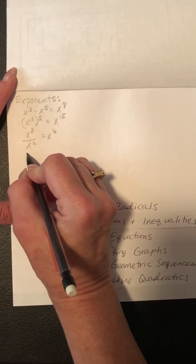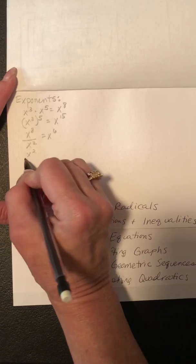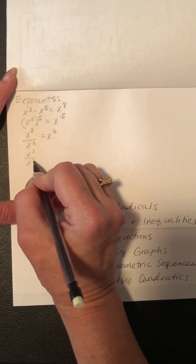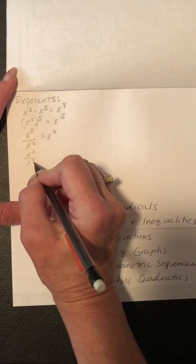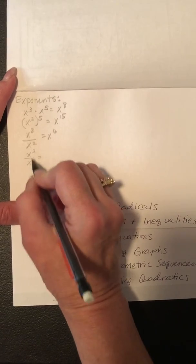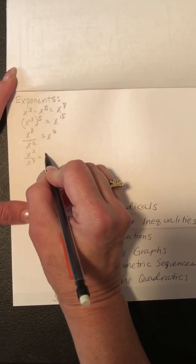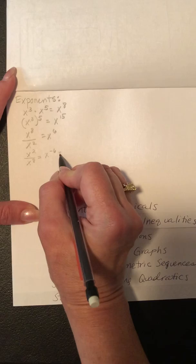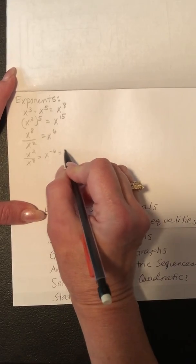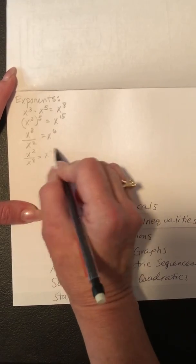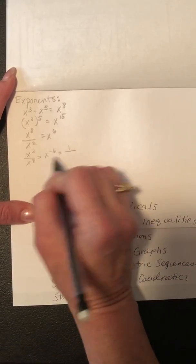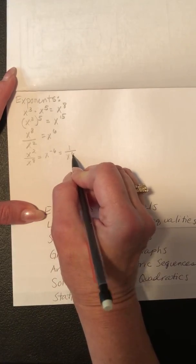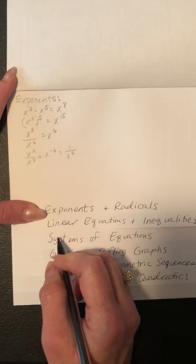If the denominator's exponent is larger than the numerator's and you subtract, you would get x to the negative 6th. Remember, you can't leave a negative exponent anywhere — you have to move it to the denominator, and you would get 1 over x to the 6th.